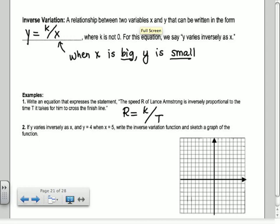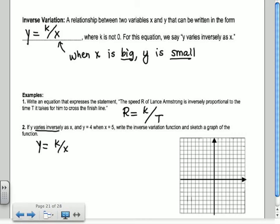Okay, so the next one says if y varies inversely as x and y equals 4 when x equals 5. Whenever you see it varies inversely, that's when you have k over, so it's y equals k over x. So y equals 4 when x equals 5, so 4 equals k over 5. So what's k? Okay, 20. So my inverse variation function is y equals 20 over x. So that's what that is.